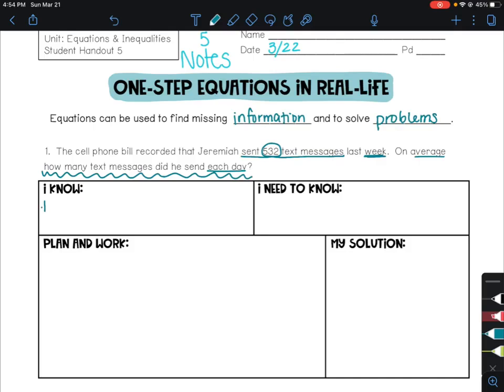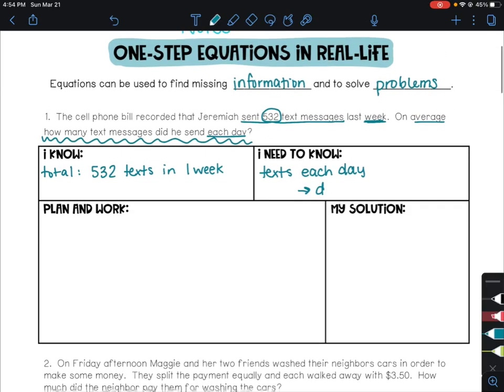Somehow we have to change the weekly amount to a daily amount. And then the question is asking, how many texts each day? I saw one other keyword, and it's the word average. Average is usually telling us that we're dealing with multiplication or division. So total was 532 texts in one week.